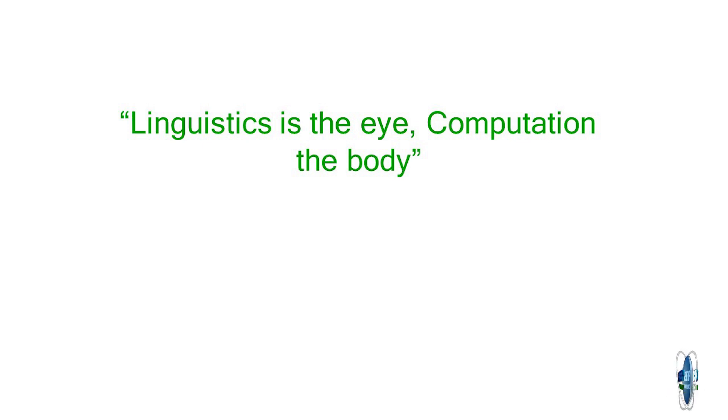Linguistics is the eye and computation is the body. We need data, machine learning, and probability for effective NLP systems, but in the background there is always theory coming from linguistics, philosophy, and cognitive science. The last class covered important concepts from maths — mainly probability and matrices — and today's class covered important concepts from linguistics. It was a very quick exposition of important terms, and as we go forward we will keep needing and discussing many things like semantics, parsing, and so on. Do refer to these slides off and on as the course progresses.